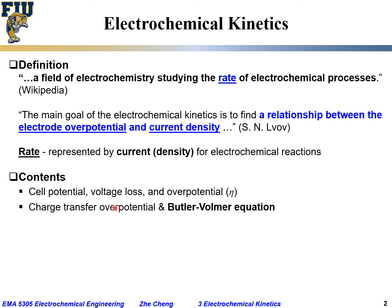— the potential for an actual electrochemical reaction to occur — versus the current. That is the Butler-Volmer equation. From that we can get a simplified form, which people sometimes call the Tafel relationship. In some other cases we may run into a linear approximation for the Butler-Volmer equation. These two are approximations for the general Butler-Volmer equation, which links current density and overpotential.